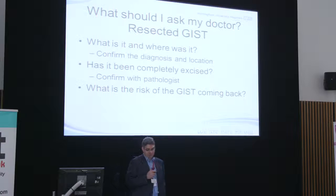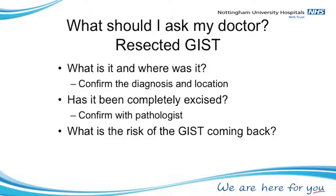Once the GIST has been cut out, the question is again: is it truly a GIST? Sometimes the biopsy can be misleading, so the actual resection specimen needs to be looked at very carefully. Where was it? Has it been completely cut out? That is a question for the pathologist. If it hasn't been completely cut out, then the whole team needs to think again about what to do next — can the surgeon take out a bit more, or was there a particular reason they couldn't take it all out?